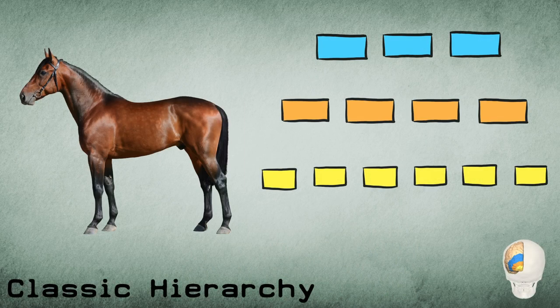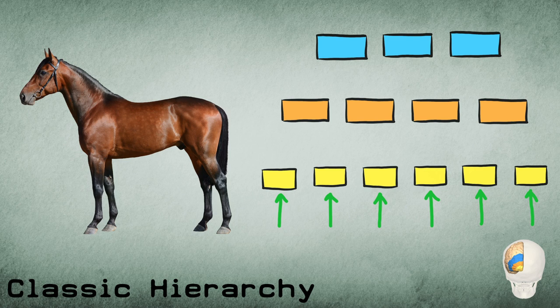Let me take you through the classic model of hierarchy in the brain, how most researchers, especially in machine learning, see hierarchy today. In the classic model of hierarchy, input comes from the senses and flows into regions in the bottom level of the hierarchy.